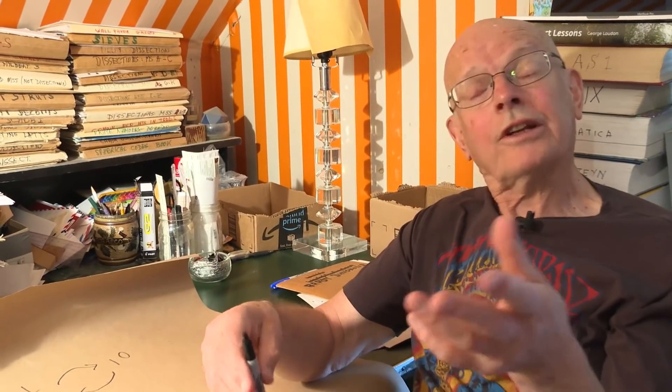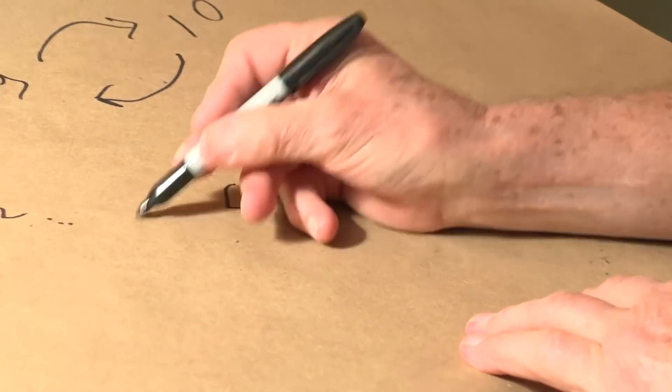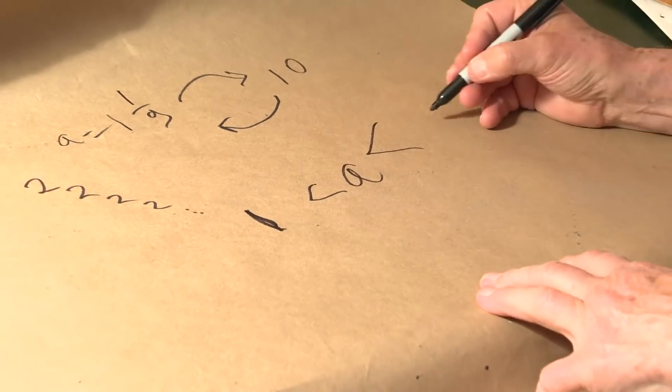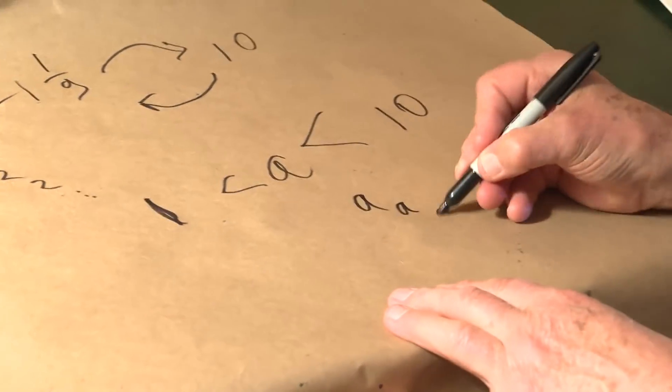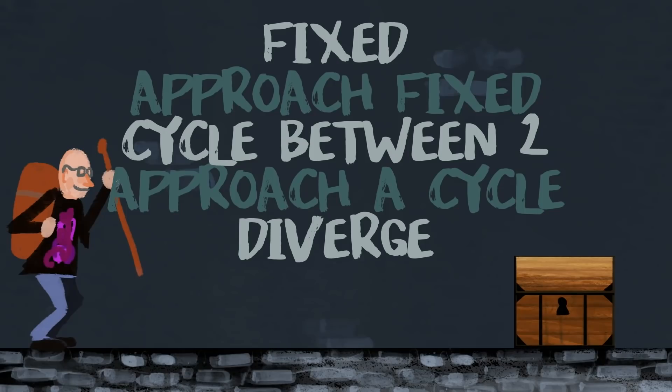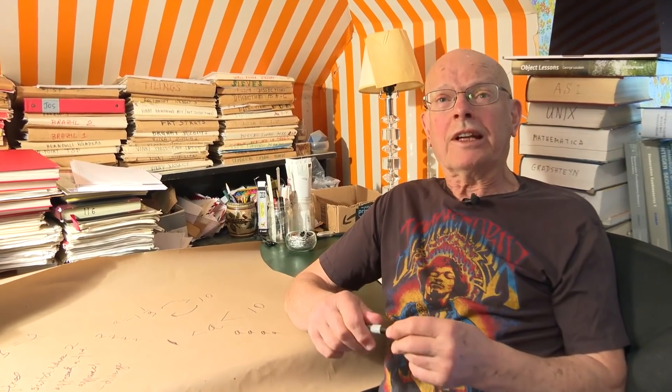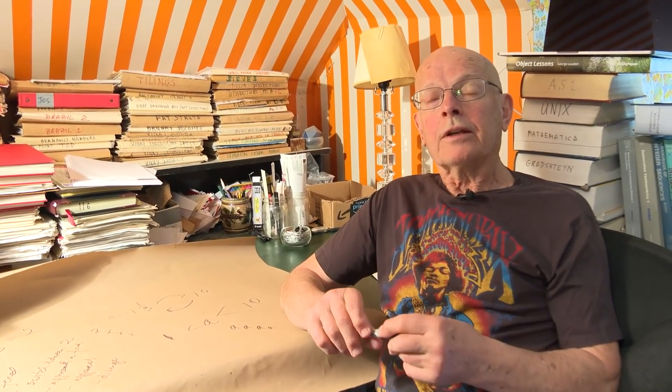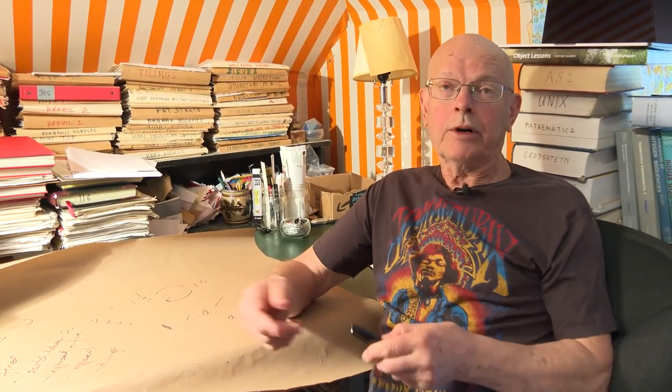The third possibility is that it diverges and goes to infinity, and there are examples of that too. The interesting question is: if you give me a random number in the range between 1 and 10 and look at a, a, a, a — there are five different things that could happen. We're not able to figure out what actually happens for a particular a. We have examples of all five behaviors, but we cannot predict in advance what's going to happen. It's very tricky. This is a subject called symbolic dynamics.